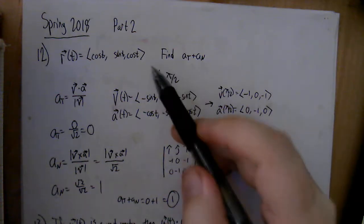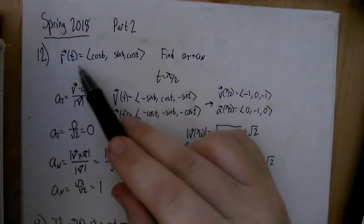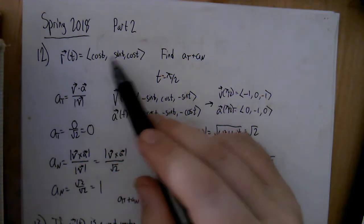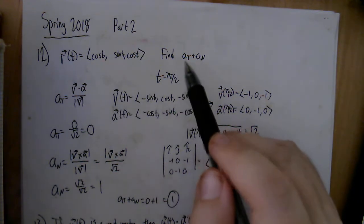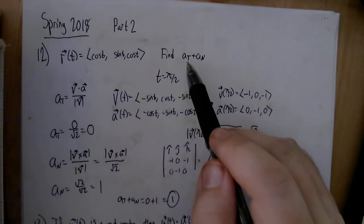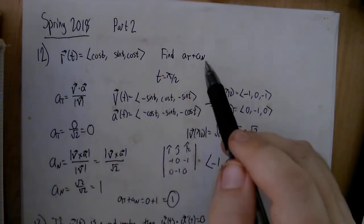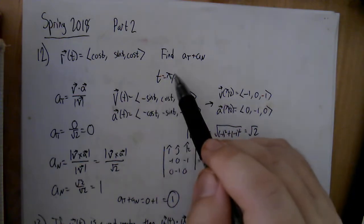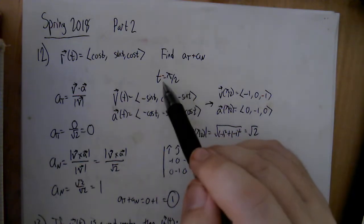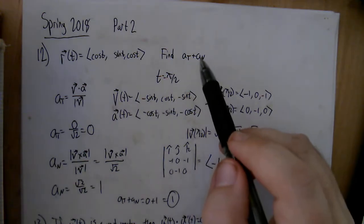We left off at number 12, a multiple choice question. We were given a position function r of t, which is cosine, sine, and cosine. Our goal was to find the sum of the tangential acceleration with the normal or centripetal acceleration at t equals pi over 2. We're going to find each of these separately and then add them together.